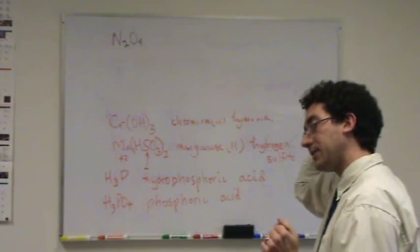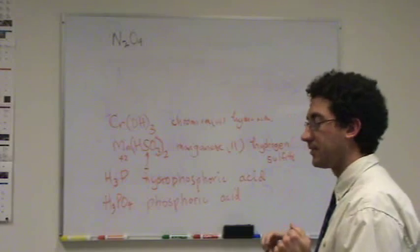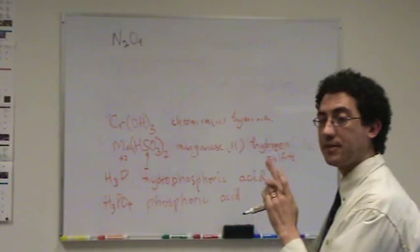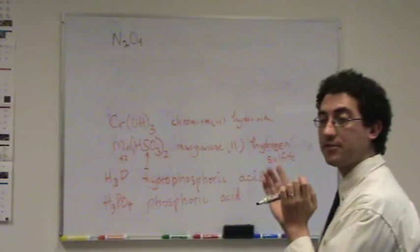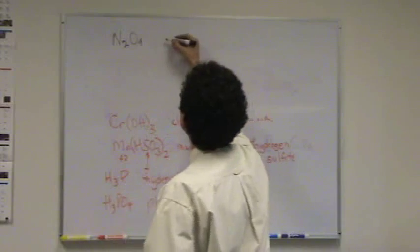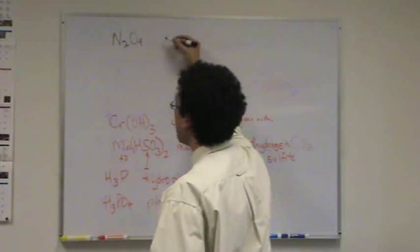Okay, of our three categories, what is this? Molecular? Yeah, this is molecular. And there's no metal here, and there's no H in front, so it rules out the other two. So we're thinking binary? Yeah, binary.